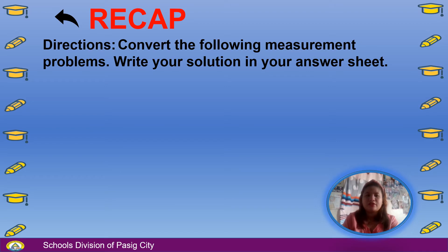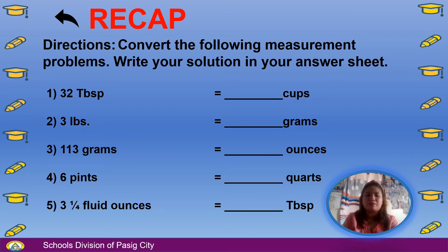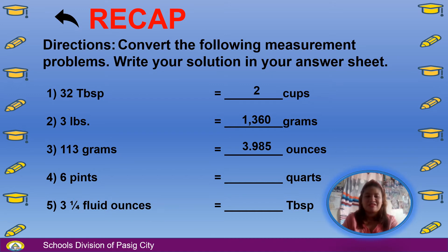Let's do a recap — convert the following measurement problems and write your solution in your answer sheet. Number 1: 32 tablespoons equals 2 cups. Number 2: 3 pounds equals 1,360 grams. Number 3: 113 grams equals 3.985 ounces. Number 4: 6 pints equals 3 quarts. Number 5: 3 and one-fourth fluid ounces equals 6.5 tablespoons.